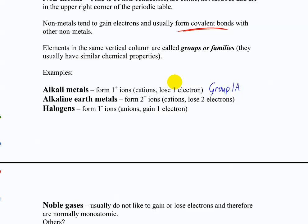Other groups to know: the halogens are group 7A or group 17 - fluorine, chlorine, bromine, and iodine. They are anions that gain one electron in most situations when they form an anion, but they can also be part of polyatomic ions. Astatine (At), element 85, is not generally included because it's radioactive and doesn't behave like the other halogens. When we talk about halogens, we usually mean just those four elements.